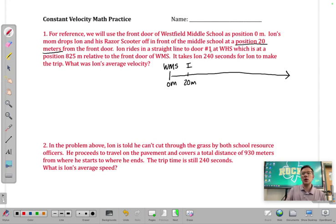It then says he rides in a straight line to door number one at the high school, which is at a position 825 meters. The key here is it says relative to the front door of the middle school. So that 825 meters, which we'll just put down here and put WHS is 825 meters from the middle school, not from where Ion started. It then says it takes Ion 240 seconds to make the trip. And then what was his average velocity? So I am literally going to give you guys a point for underlining the things that have been given to you and circling the thing that you're solving for.